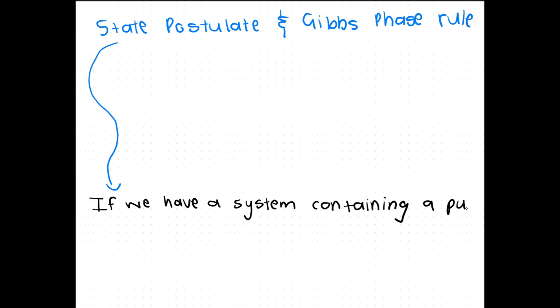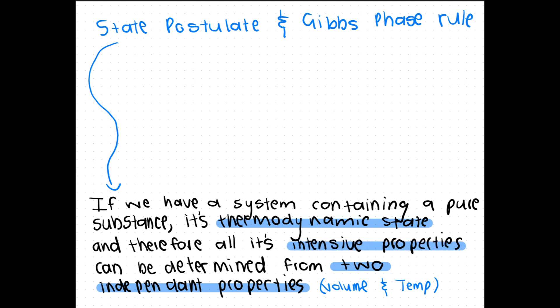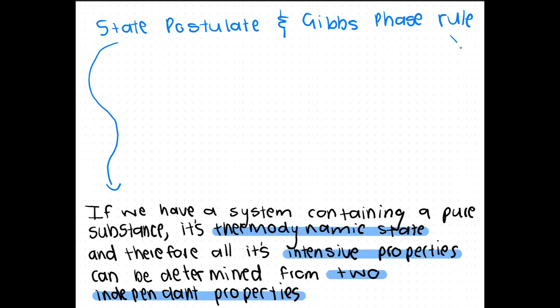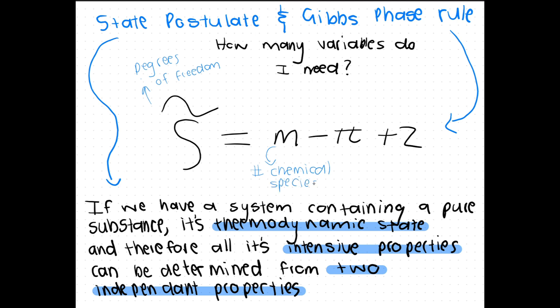Another important concept which helps us understand the systems we work with is the state postulate and Gibbs phase rule. These theories help us determine what can be calculated based on the amount of information we have. The state postulate says if we have a system containing a pure substance, its thermodynamic state and therefore all its intensive properties can be determined from two independent properties. In other words, if you know the value of two independent properties like volume and temperature, you can determine the phase of your system as well as all the other intensive properties like pressure. The Gibbs phase rule can be used similarly but it is not just limited to pure substances. It is used to calculate how many independent variables you need to calculate all the other properties and here is the formula. The degrees of freedom or how many variables you need, the number of chemical species present and the number of phases present.